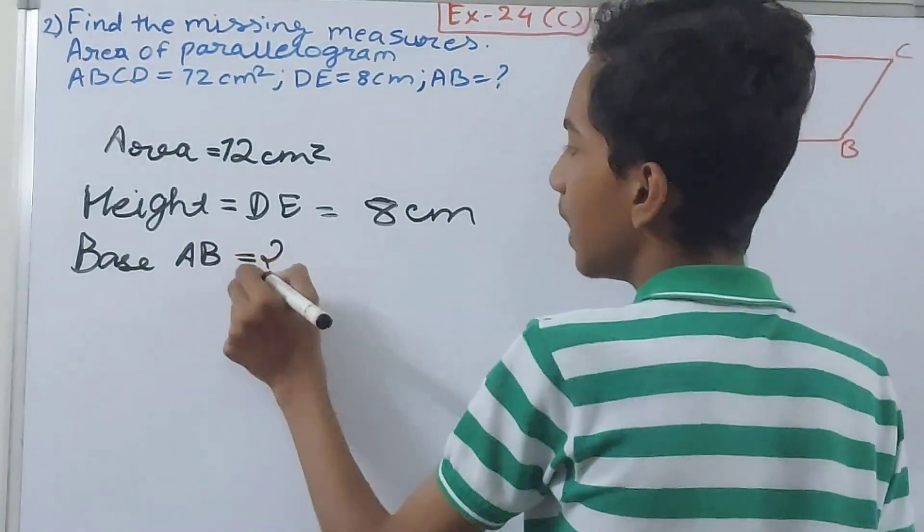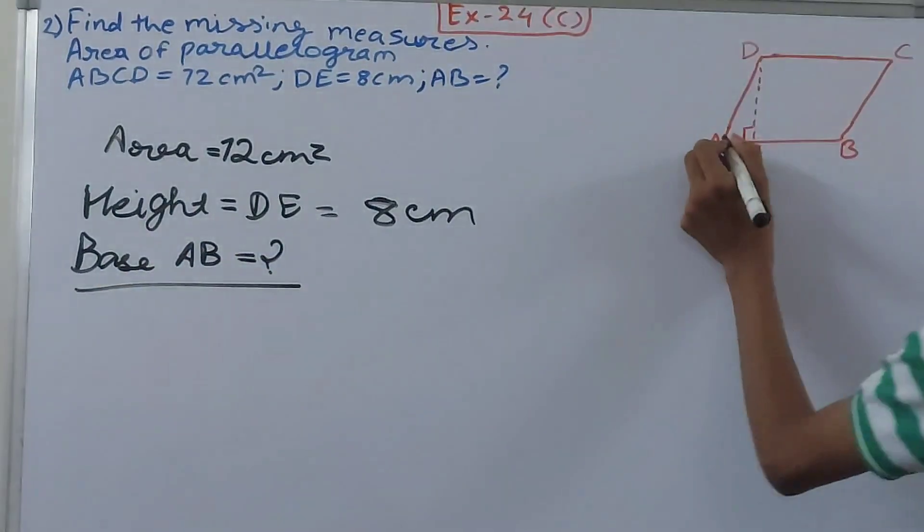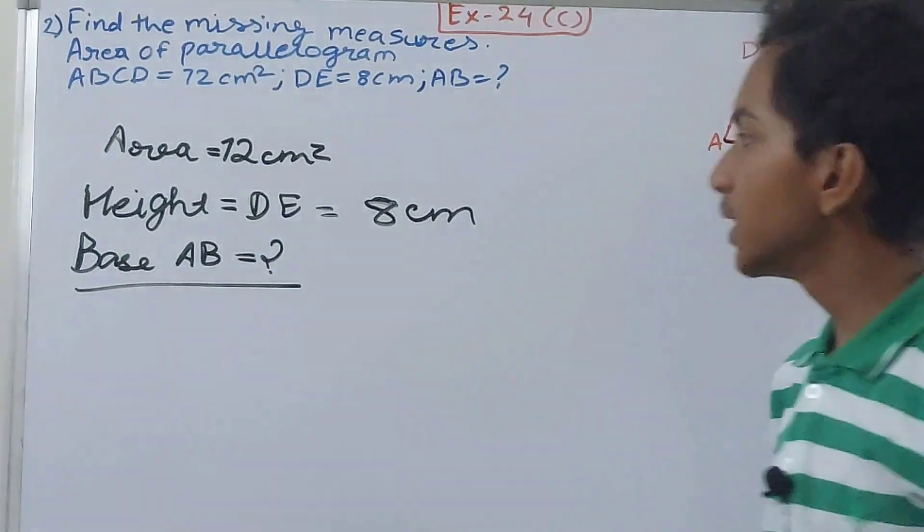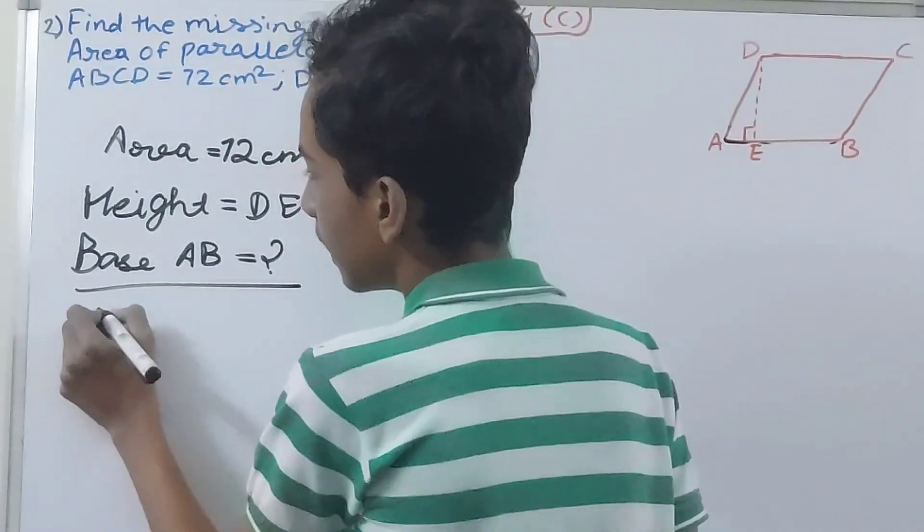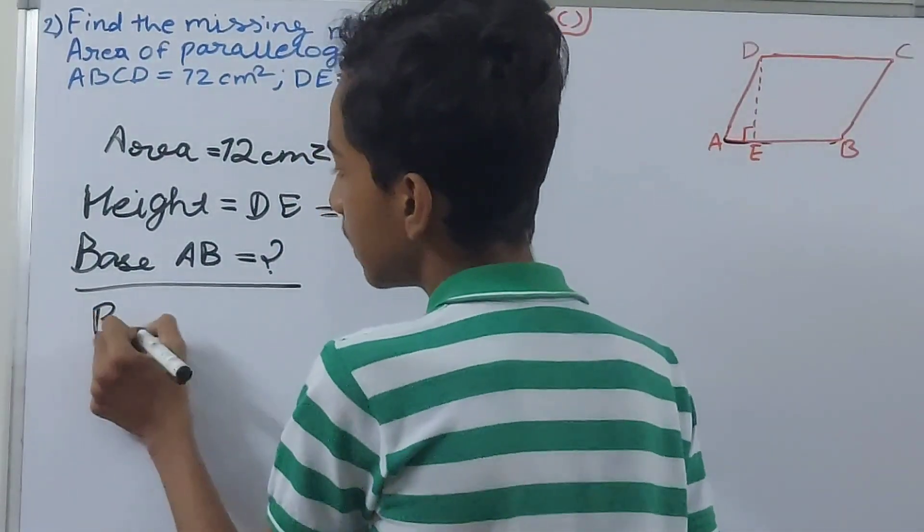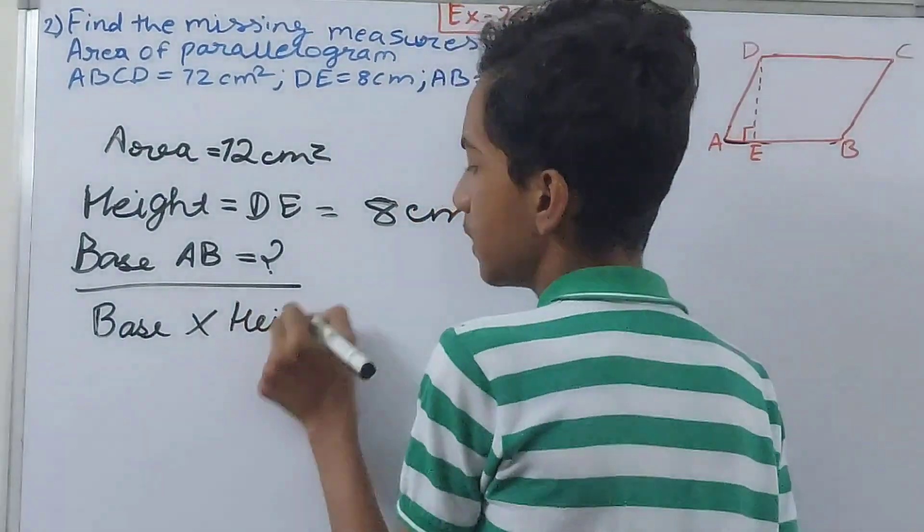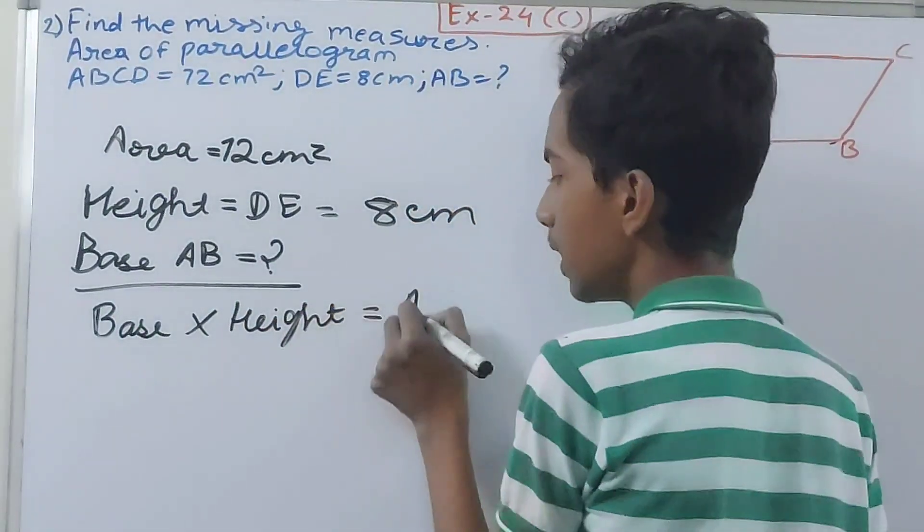This is not given, we have to find this. This is the base, from A all the way to B. Now how do we find it? See here that we know that base into height, base into height equals to area of a parallelogram.